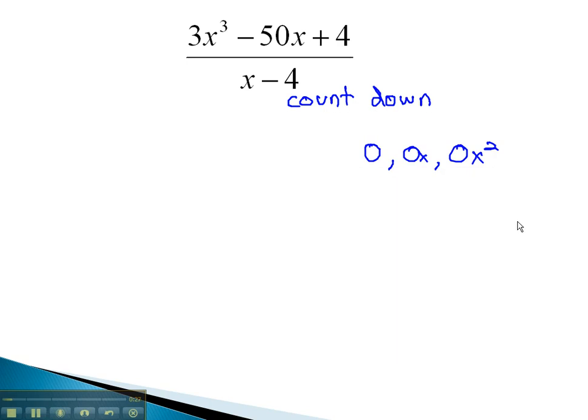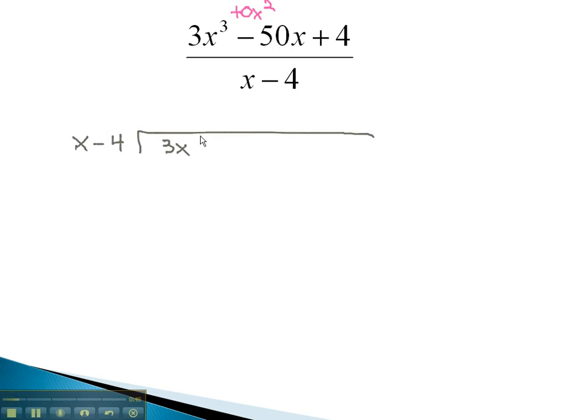For example, in this problem, you notice the numerator starts with x to the third power, but there is no x squared, so we will have to add in 0x squared to make sure our like terms line up properly. Now, we divide x minus 4 into the 3x cubed, plus 0x squared, minus 50x, plus 4. Now, we have every term accounted for: 3, 2, 1, and 0.